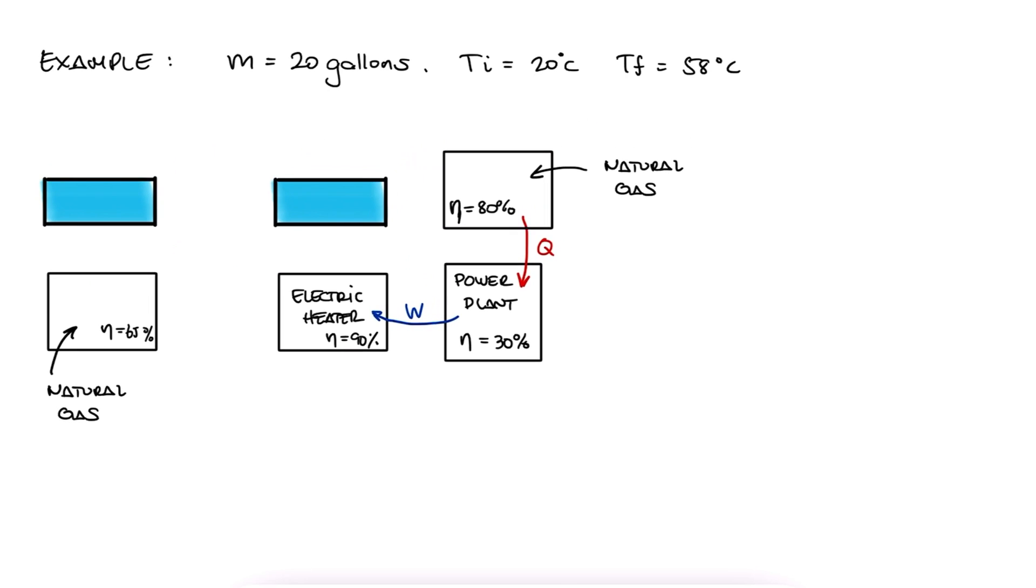If the specific heating value for natural gas is 54.9 megajoules per kilogram, how much gas in kilograms do we need to burn in each case? And what about the electric work needed to feed the electric heater?